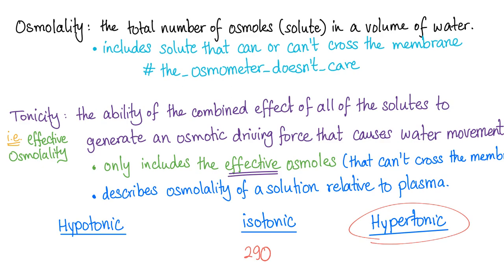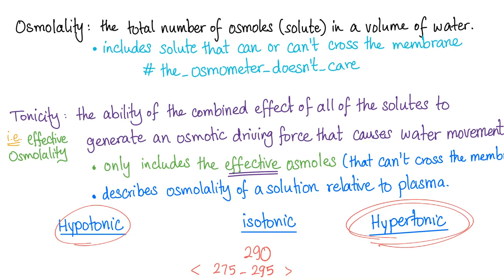What is the normal plasma osmolality? From 275 to 295 — if you say 300, that's okay. Anything less than 275 is hypotonic. Anything greater than 295 or 300, we call hypertonic. Both are bad. Isotonic is the best.